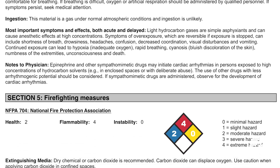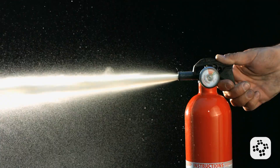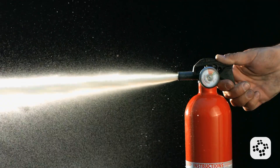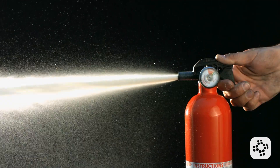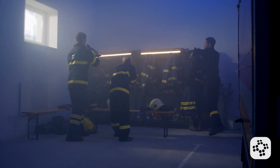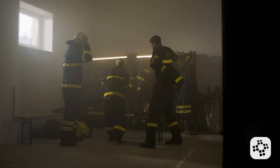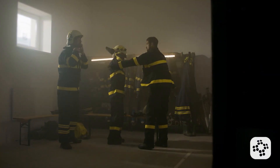Section 5: Firefighting Measures. Propane is highly flammable, so this section outlines the best way to fight fires involving the chemical. You'll find recommendations for using dry chemical or carbon dioxide extinguishers, and advice on the protective equipment firefighters should use.